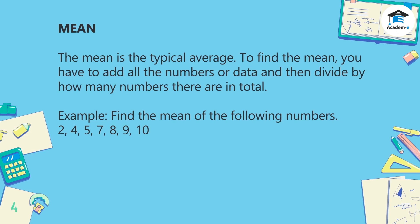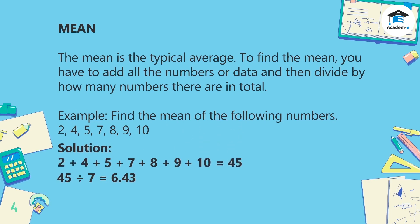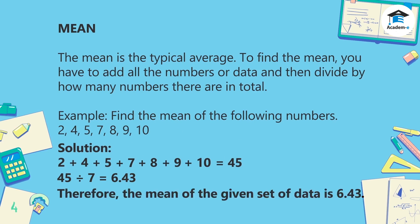To solve, add the set of data: 2 + 4 + 5 + 7 + 8 + 9 + 10, which equals 45. Then divide by the total number of data. Since there are seven numbers in total, divide 45 by 7.